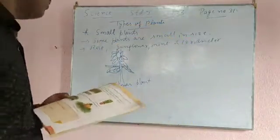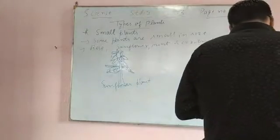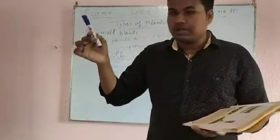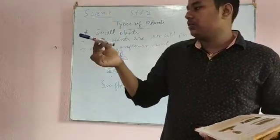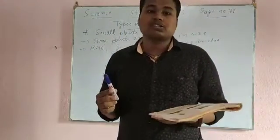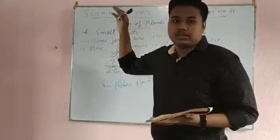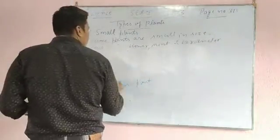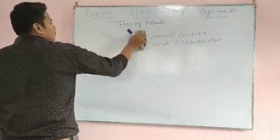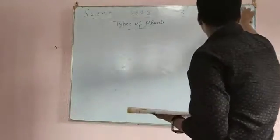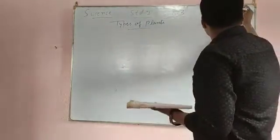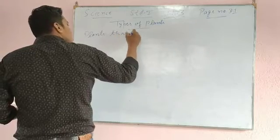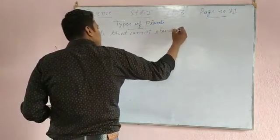That's why we call them small plants. Now we will go to plants that cannot stand erect. Erect means straight — they cannot stand erect, meaning they will lean or need the support of a stick, wall, or pole. We will now turn to page number 31.